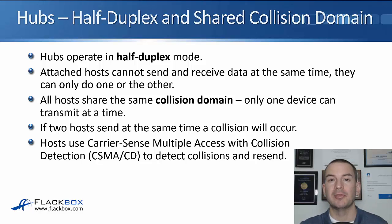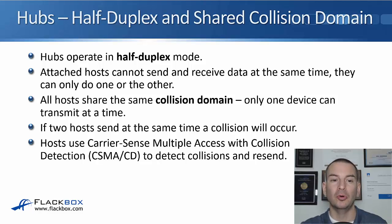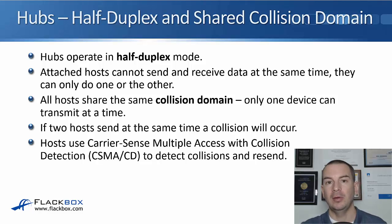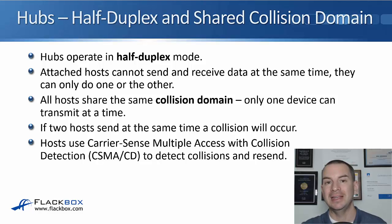Let's compare hubs and switches, starting with hubs. Hubs always operate in half duplex mode, meaning that the attached hosts can either send or receive data — they can't do both at the same time. All of the hosts plugged into that hub share the same collision domain, meaning only one device can transmit at a time. If two devices transmit simultaneously, they will detect that, back off, and resend. The method used for detecting and recovering from collisions is CSMA/CD — Carrier Sense Multiple Access with Collision Detection. So hubs: half duplex and a shared collision domain.